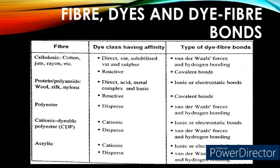If cationic dyeable polyester is dyed using cationic dye stuff, the bond formed is an ionic or electrostatic bond. If the same cationic dyeable polyester is dyed using disperse dyes, the dye-fiber bond is van der Waals forces and hydrogen bonding. Similarly, acrylic dyed using cationic dye stuff forms an ionic or electrostatic bond, but if the same acrylic is dyed using disperse dyes, the bond type is van der Waals forces or hydrogen bonding.